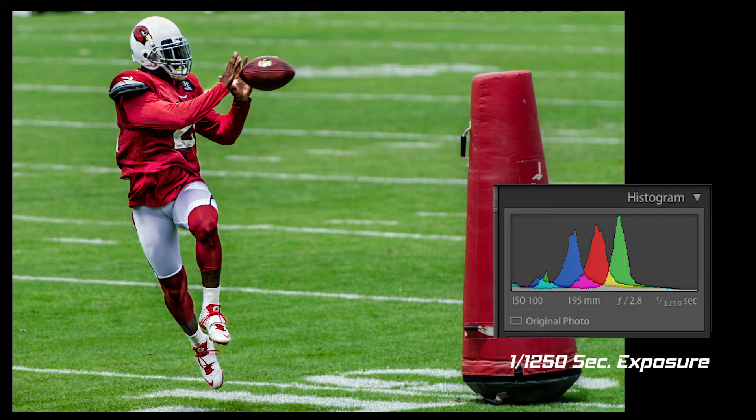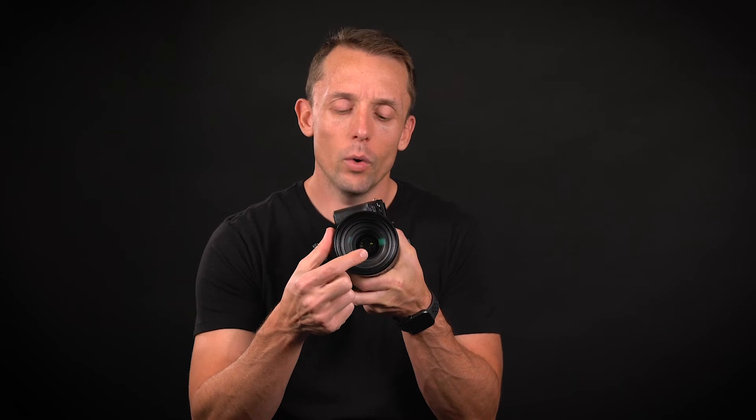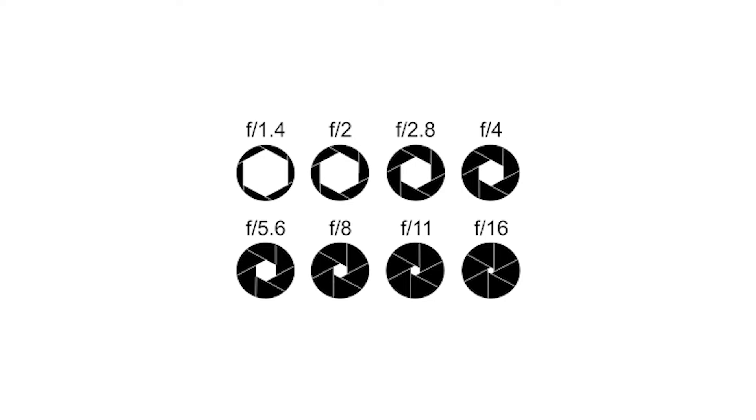The next part is the aperture — that's the actual mechanism on the lens that lets light in. If you look inside your lens, you'll see this little opening that will either look really big or really small. If it looks really big, it's going to be a very low aperture, like 1.4, 1.8, 2.8. If it's really small and closed down, you probably have it set at F8, F14, F22.